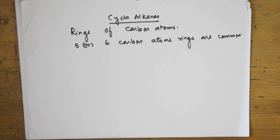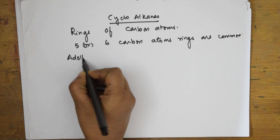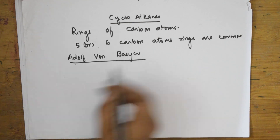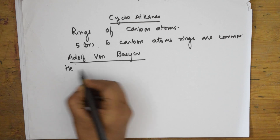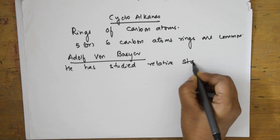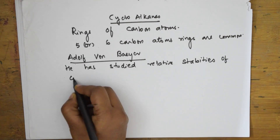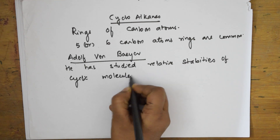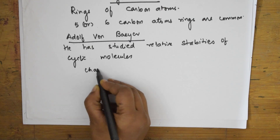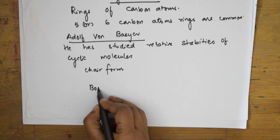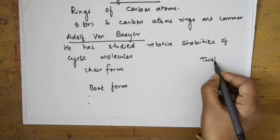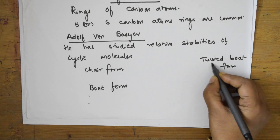This particular study about cycloalkane conformations was given by Adolf von Baeyer. He studied the related stabilities of cyclic molecules. The stable forms of cycloalkanes are the chair form, boat form, and twisted boat form.